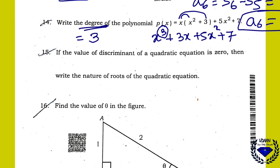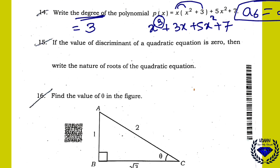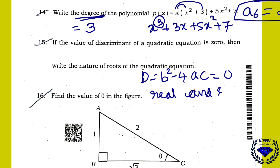If the value of the discriminant of a quadratic equation is 0, that is D = b² − 4ac = 0, write the nature of roots. The nature of roots is: real and equal. You can also write 'roots are equal.'